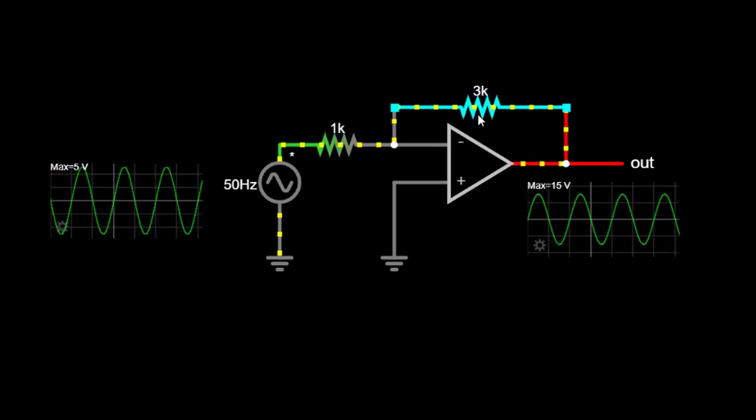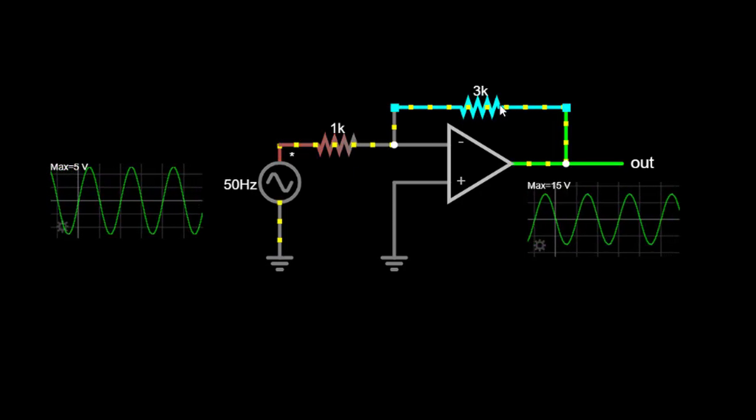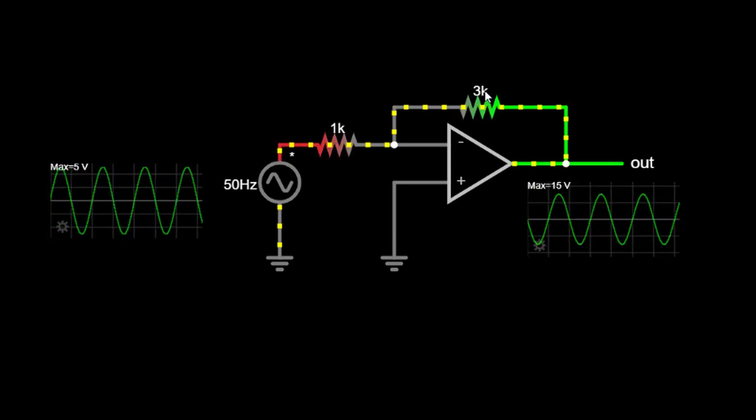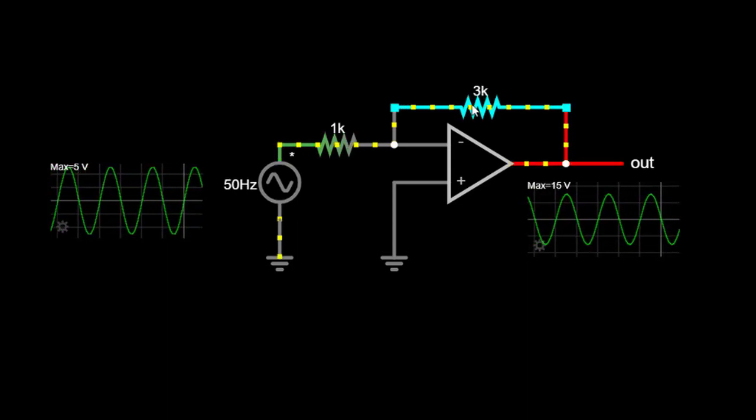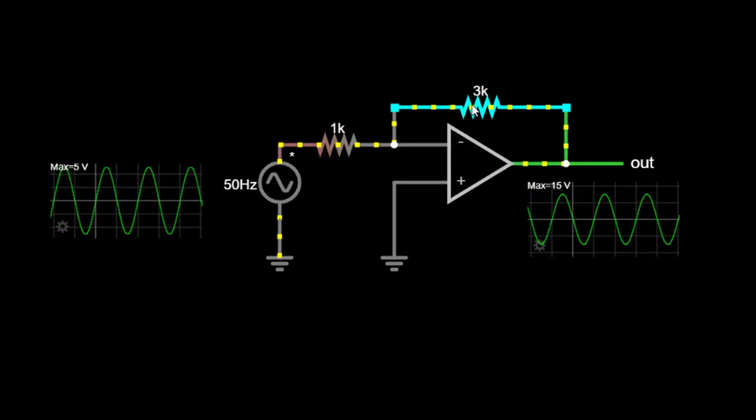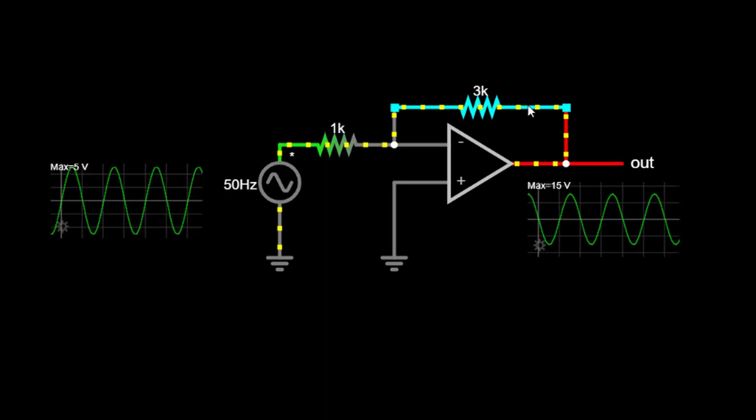To create the negative feedback necessary for an inverting amplifier, we connect a resistor called the feedback resistor, RF, between the output and the inverting input of the OPAMP. The other end of the feedback resistor is connected to the output pin of the OPAMP.